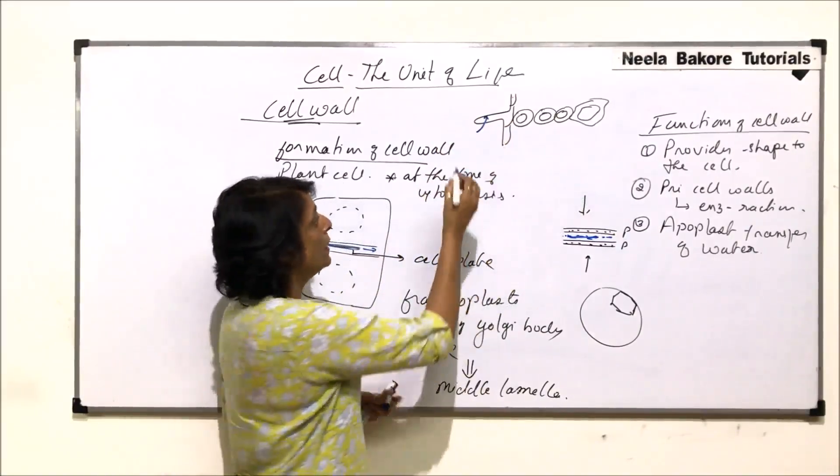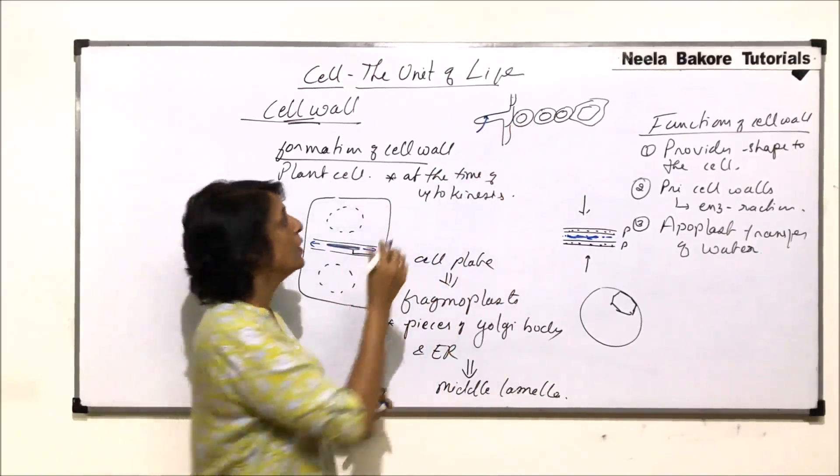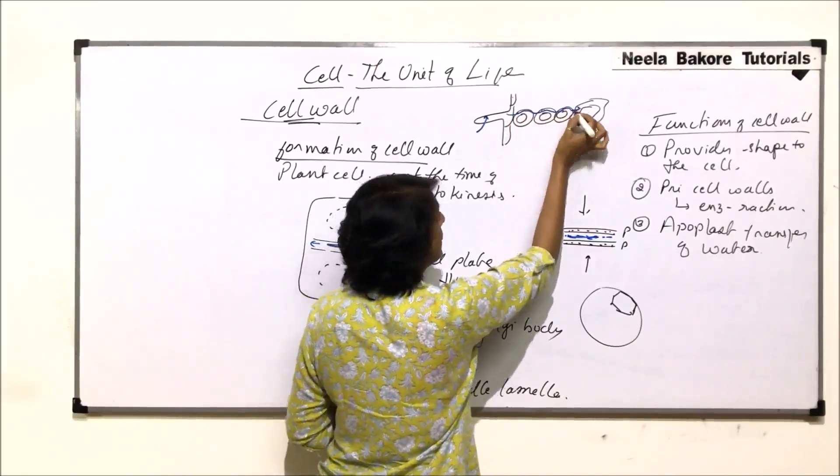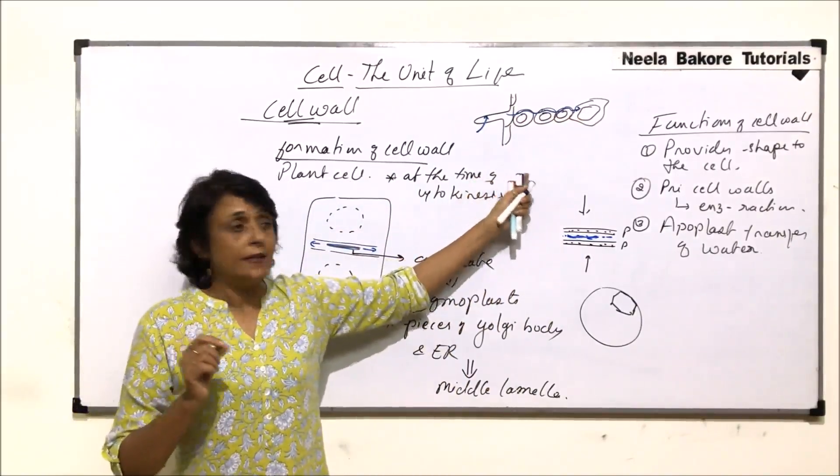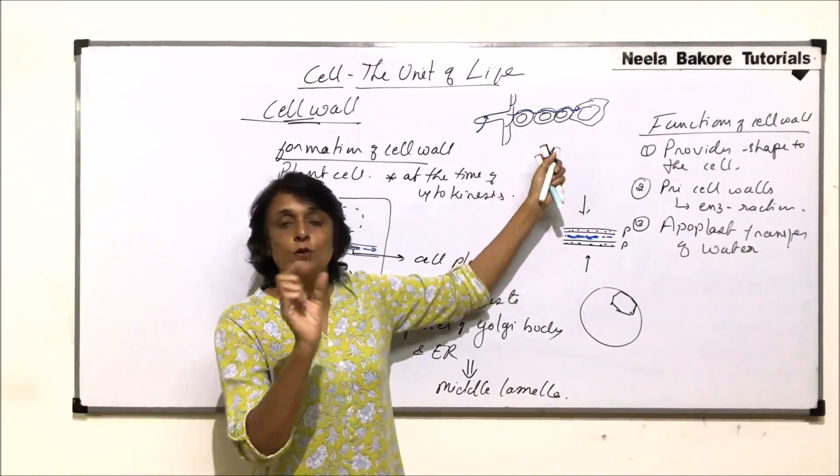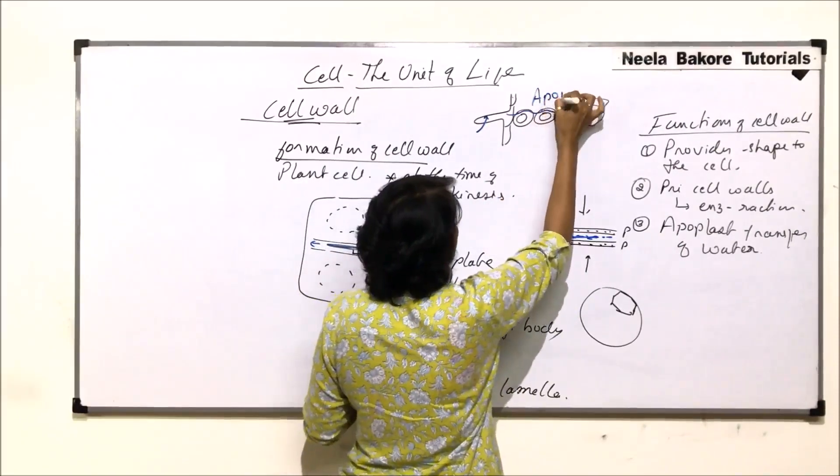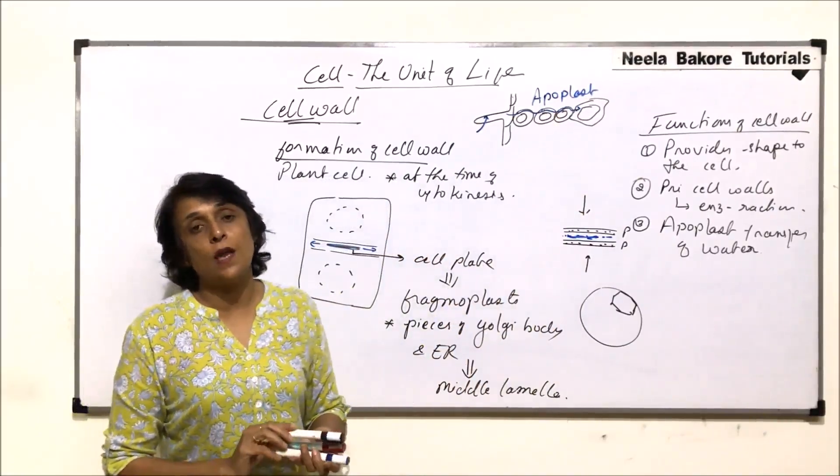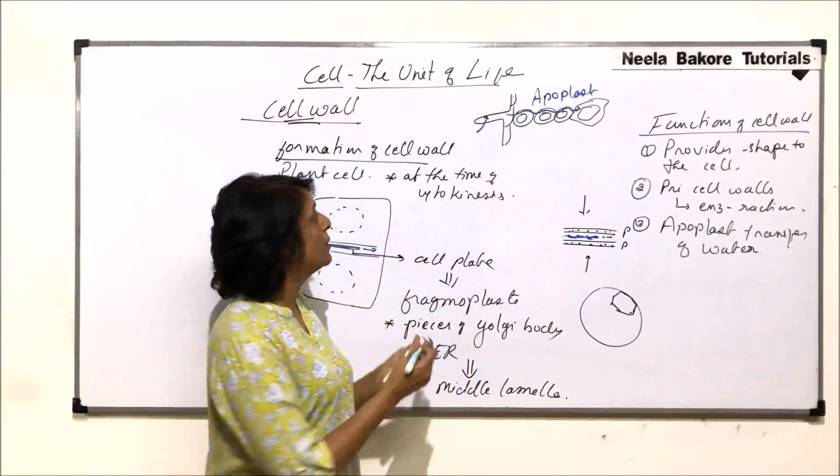From root hair it has to reach up to the xylem so that it can be conducted upwards. This is known as absorption of water with the help of root hair. Now this water, it has two possible routes through which this water can go. One is when water goes through the cell wall of one cell to the next to the next and finally to the xylem. Here the cell wall is helping in transport of water.